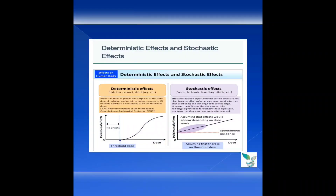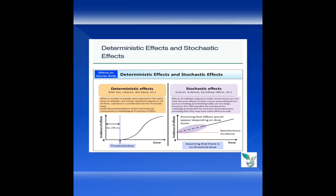The effects on the human body are of two types: deterministic effect and stochastic effect. Deterministic effect is otherwise known as non-stochastic effect. Examples of deterministic effects include hair loss, cataracts, and skin injury. Stochastic effects include cancer, leukemia, and hereditary effects. When a number of people are exposed to the same amount of radiation, certain symptoms occur in 1% of them — that dose is considered the threshold dose. Above the threshold dose there is no effect for deterministic effects. For stochastic effects, the impact of radiation under certain dosages is unclear due to other cancer-promoting factors such as smoking and drinking habits, and it is assumed there is no threshold dose.